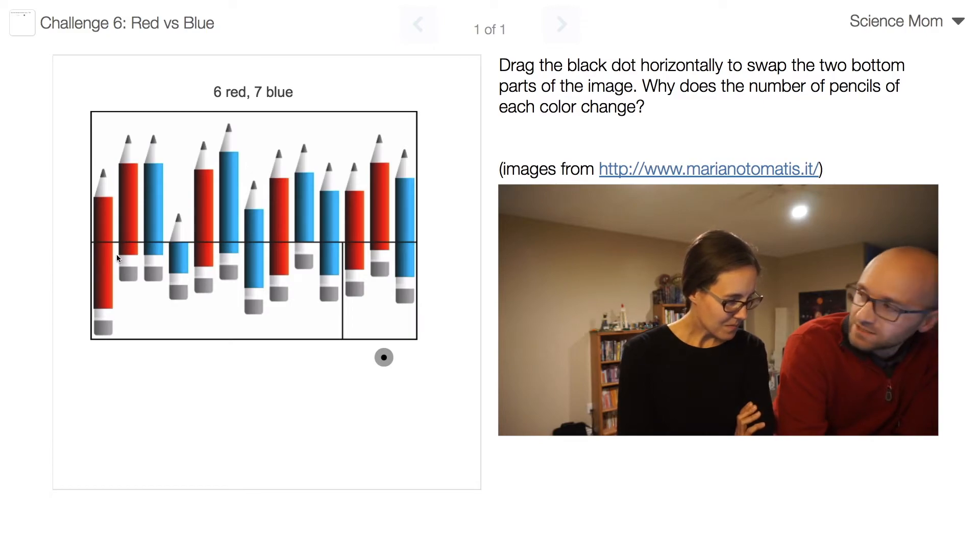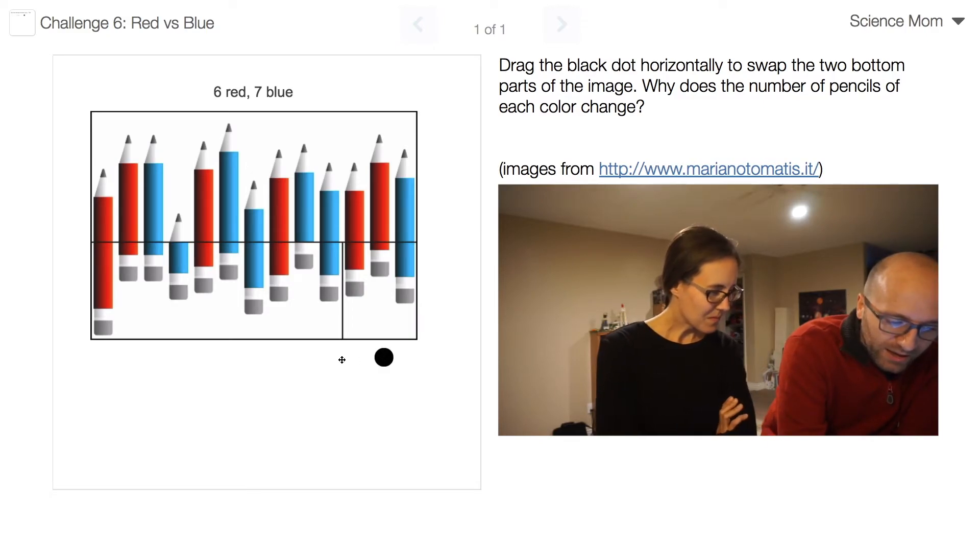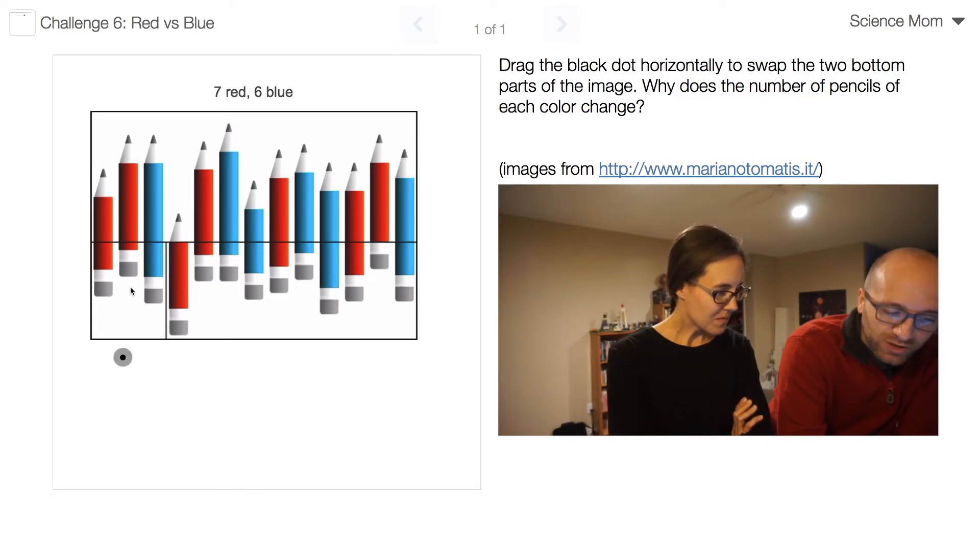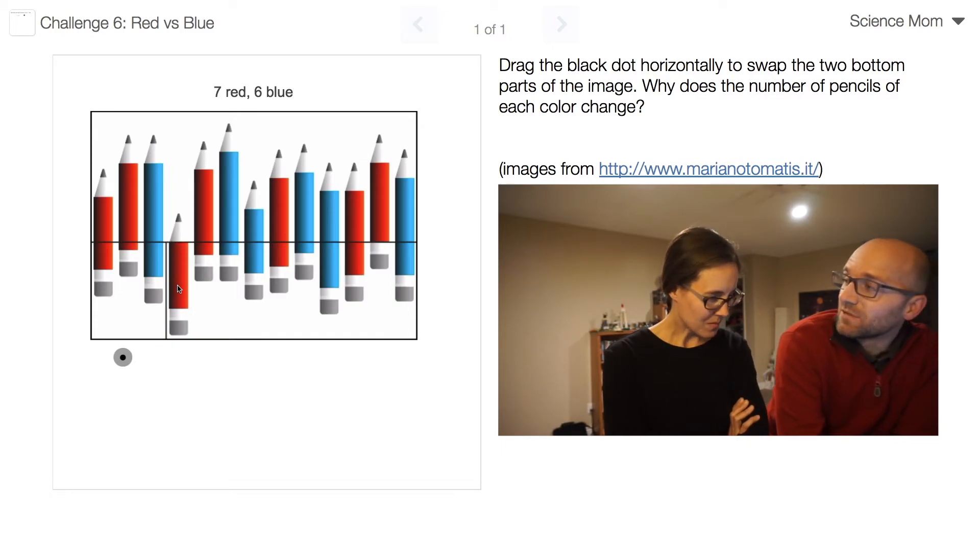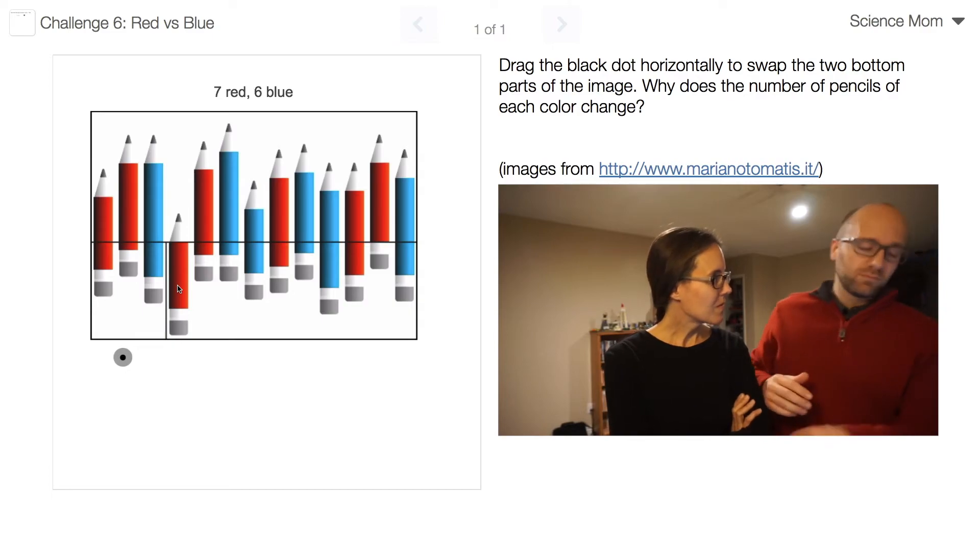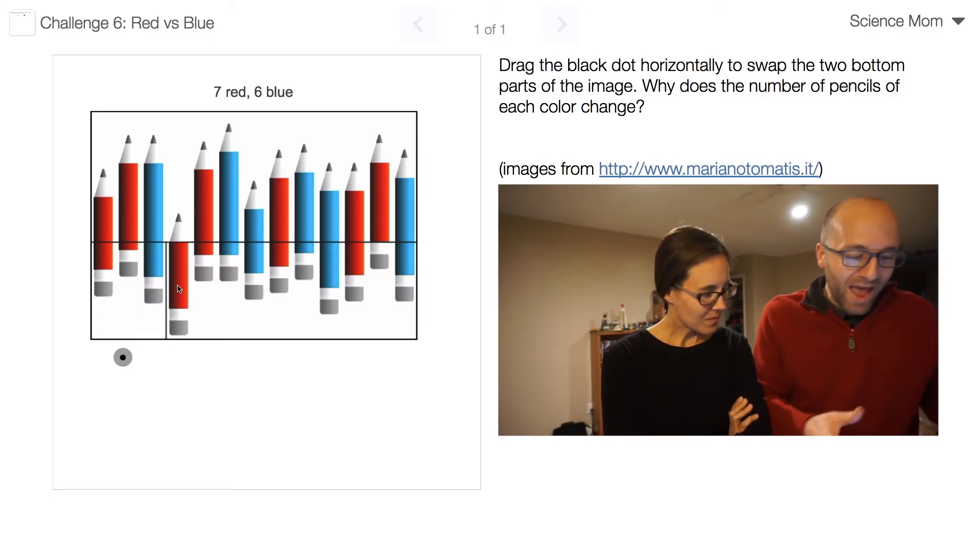When I drag it back, all the red pencils get a little bit shorter on average, but now there's a seventh one. So all of the mass was hidden or redistributed when we swapped the two bottom pieces.